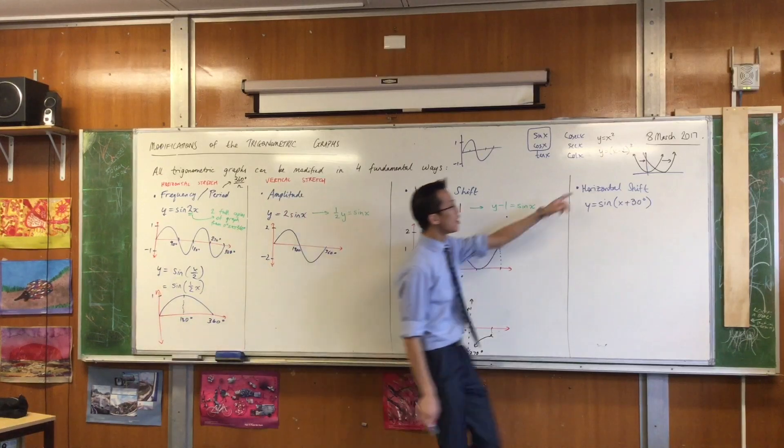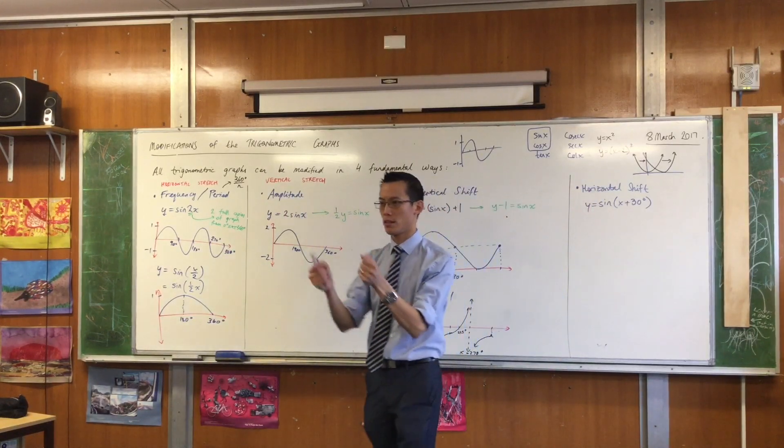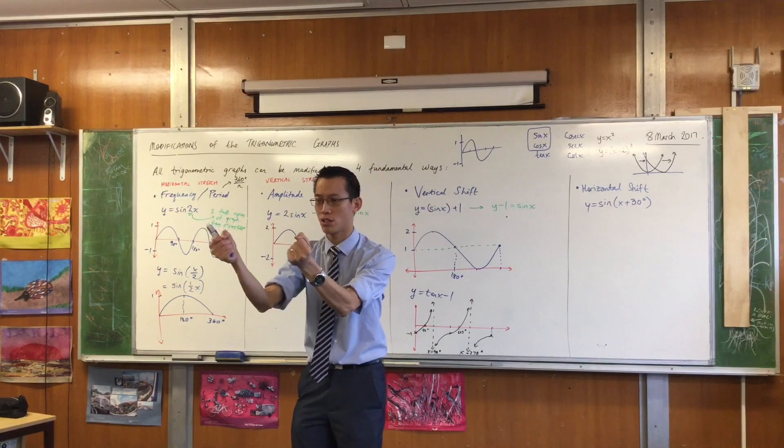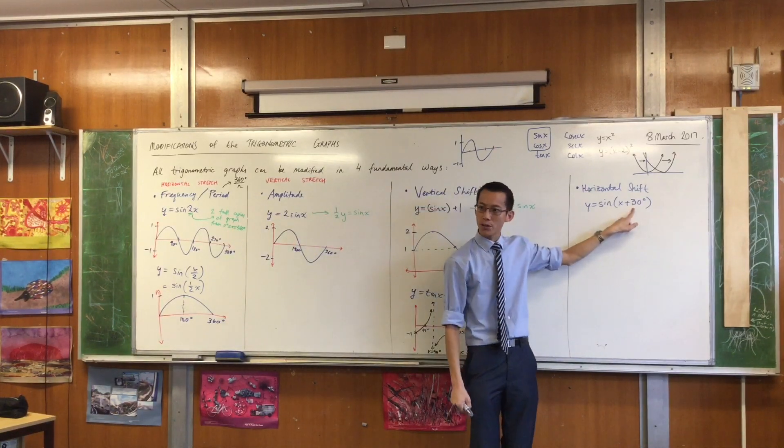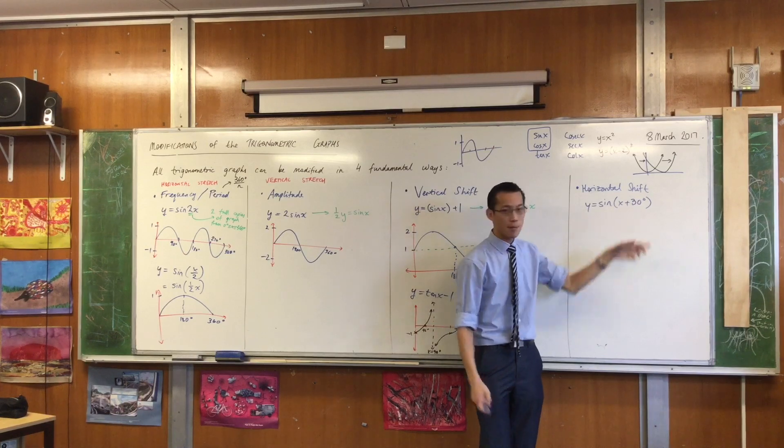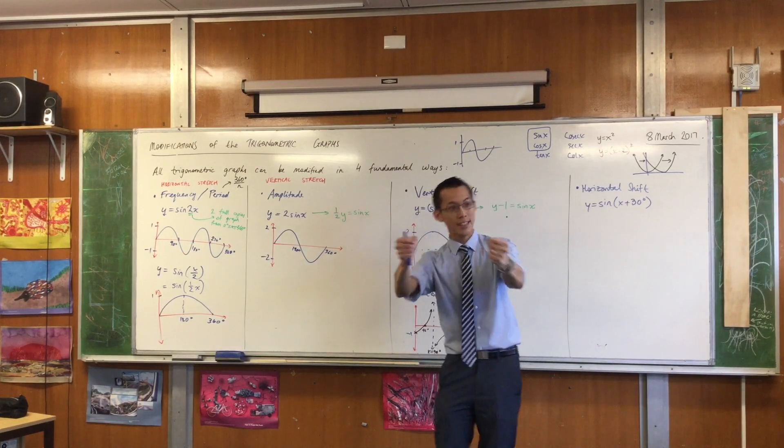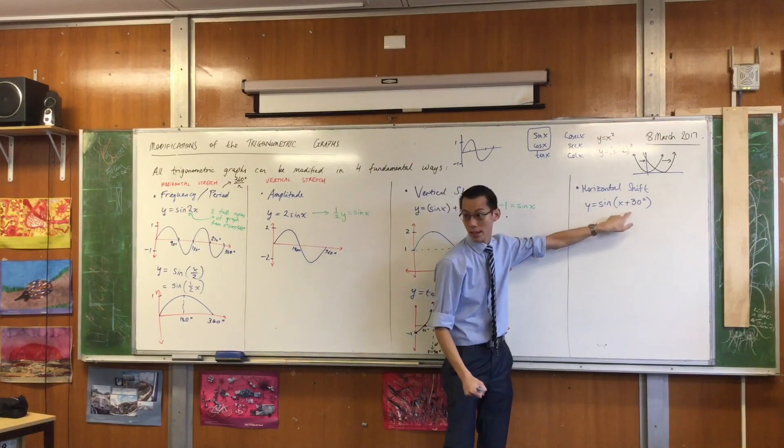Now look at that parabola that you drew up in the corner. When you saw a minus two, you took that parabola and you went two units. So when I look at this, I'm going to take my sine curve and I'm going to move it 30 degrees to the left. It's that reverse thing there.